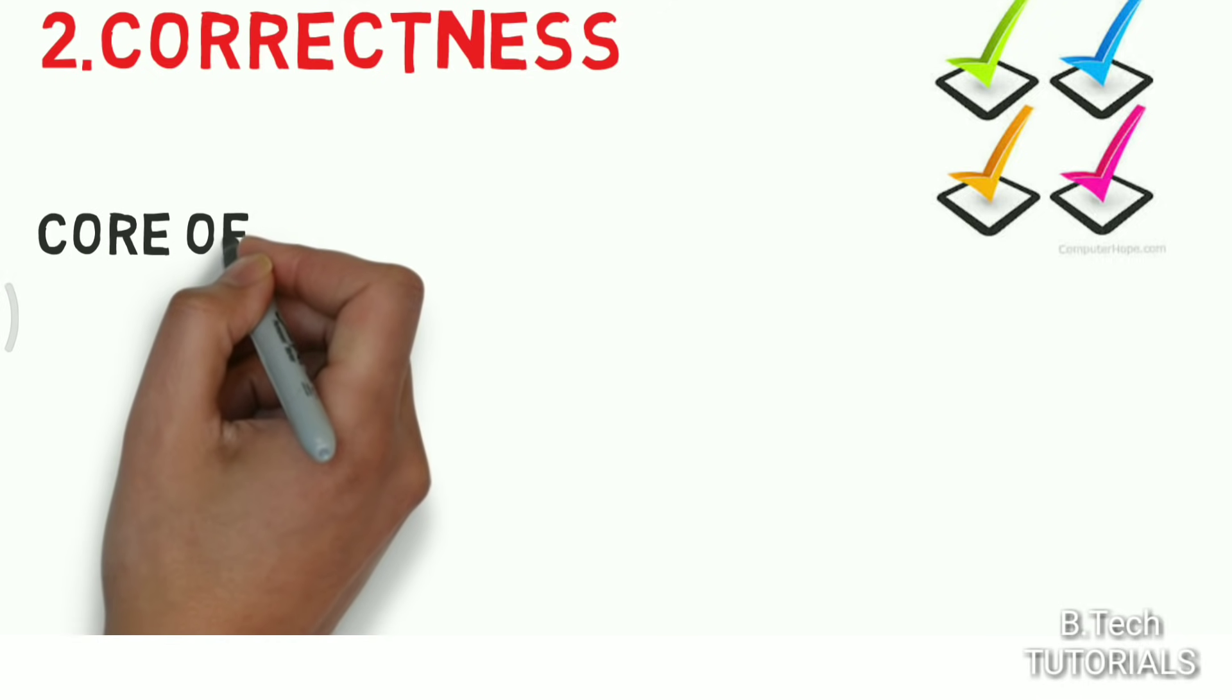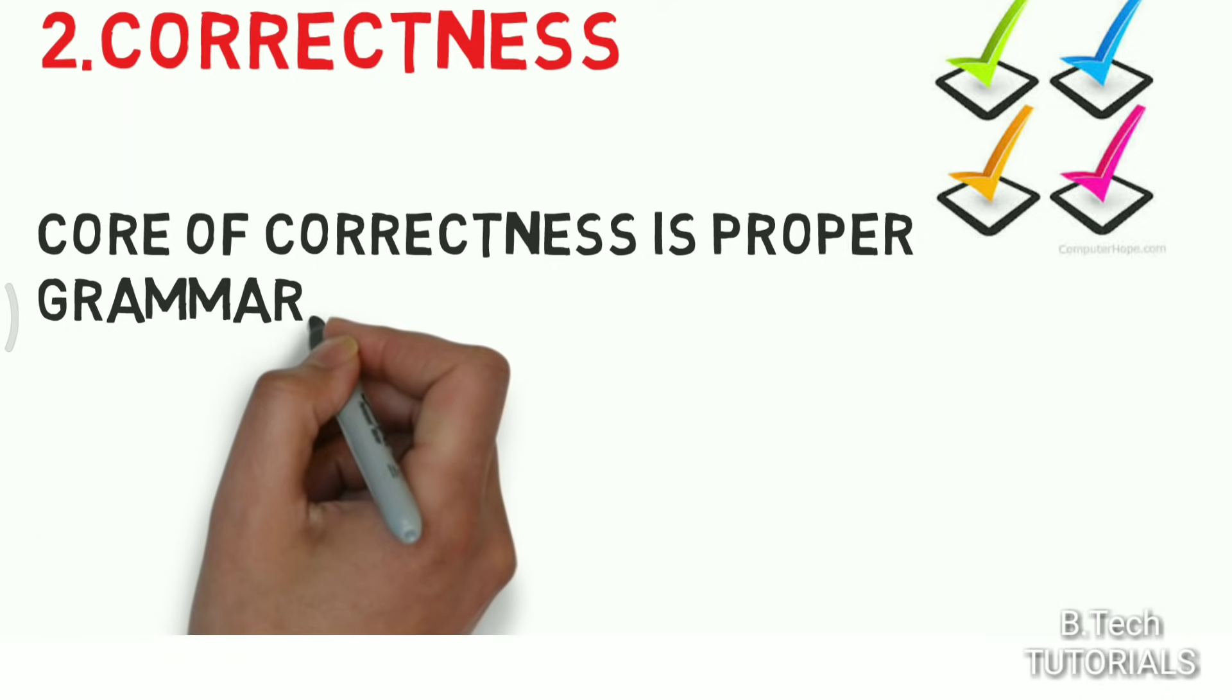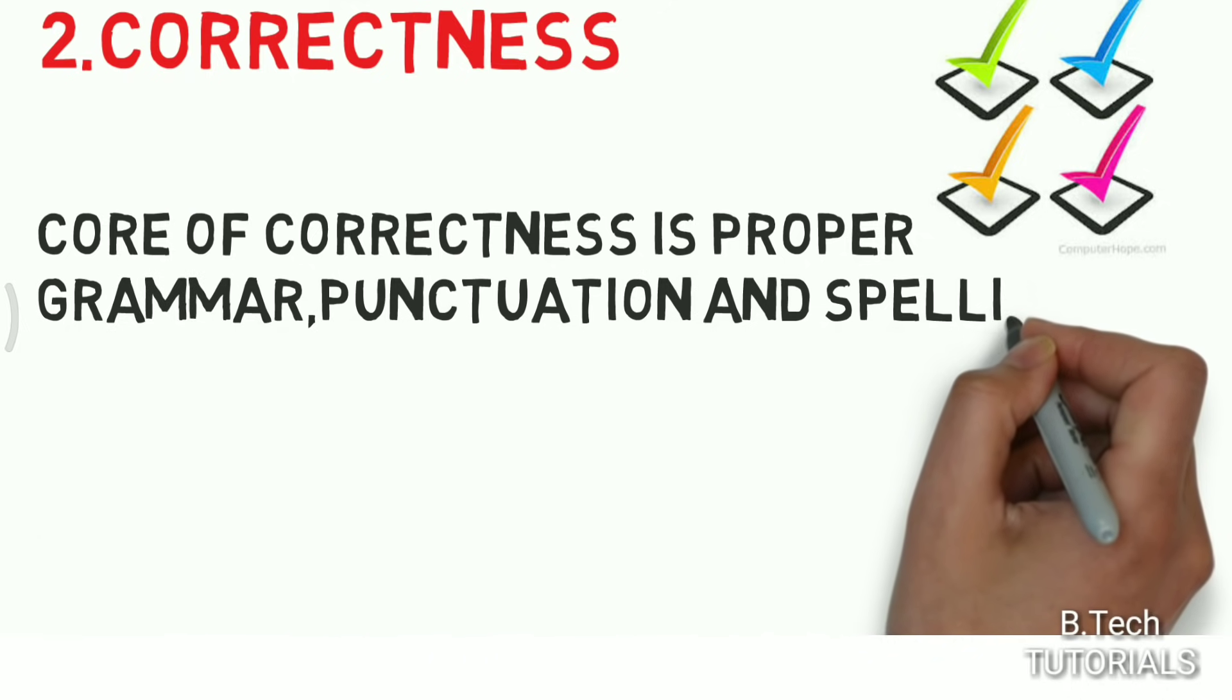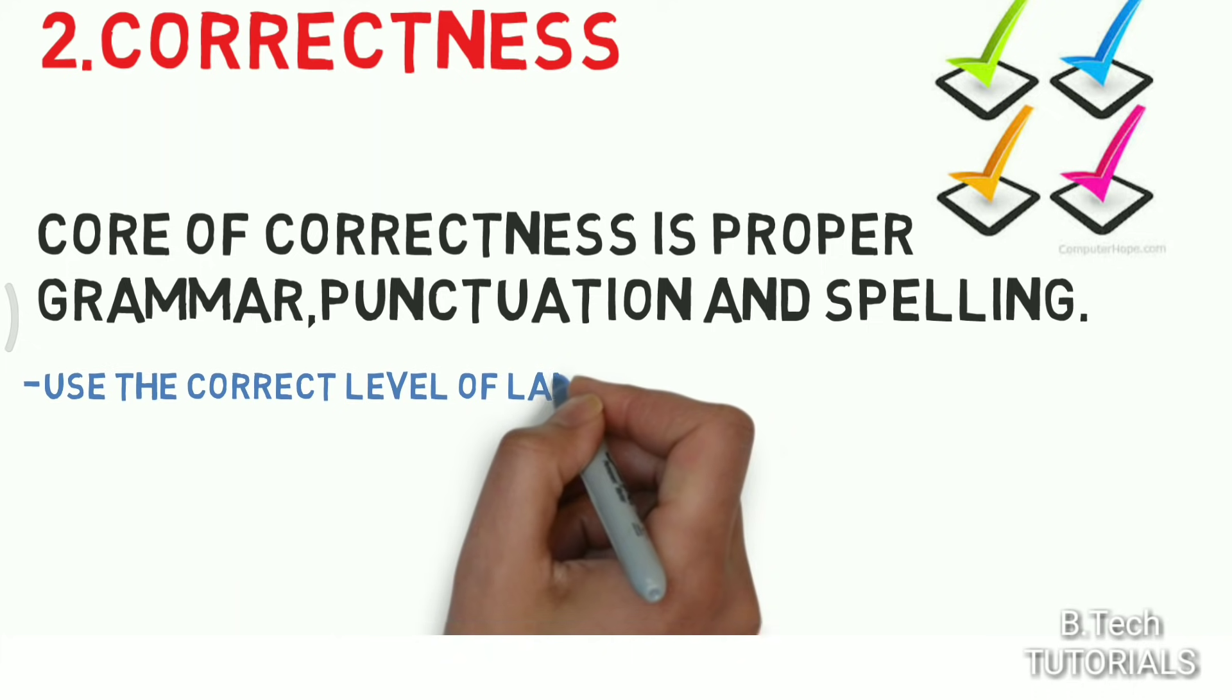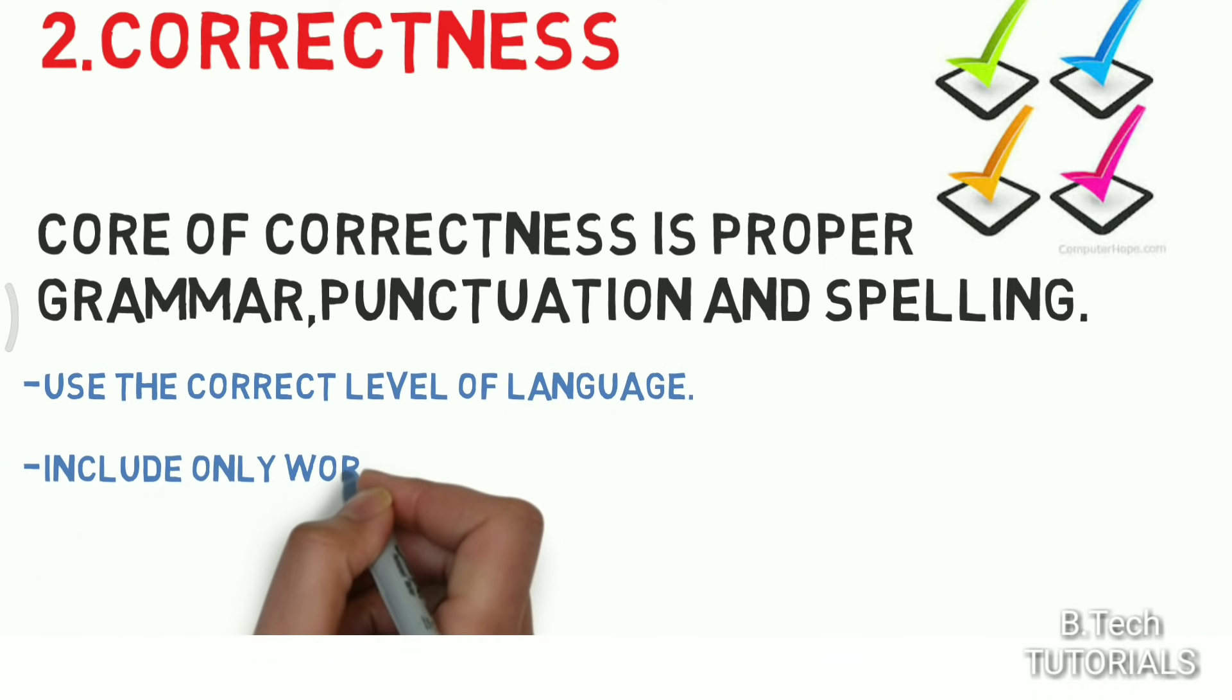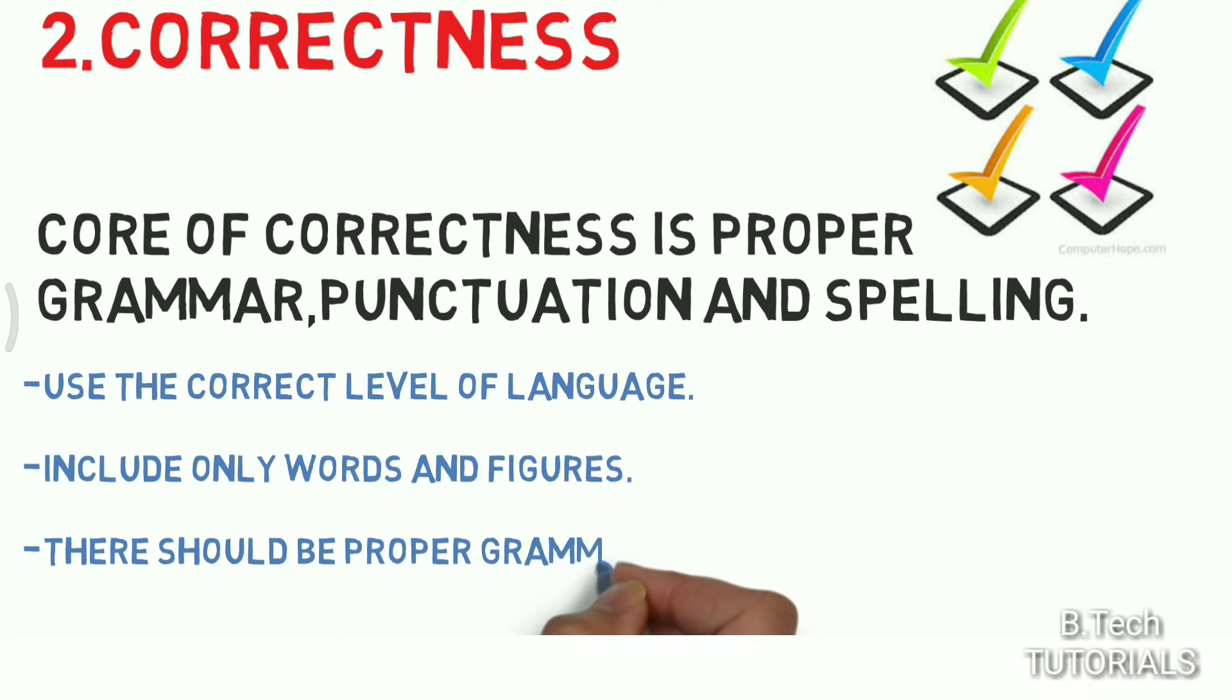Second point is correctness. It means the data we are presenting, speaking, or writing should be correct and always in a proper format. The core of correctness is proper grammar, punctuation, and spelling in our writing of business letters or other formats, or in speaking. Use the correct level of language that should be correct and understood by others. Include only accurate words and figures.